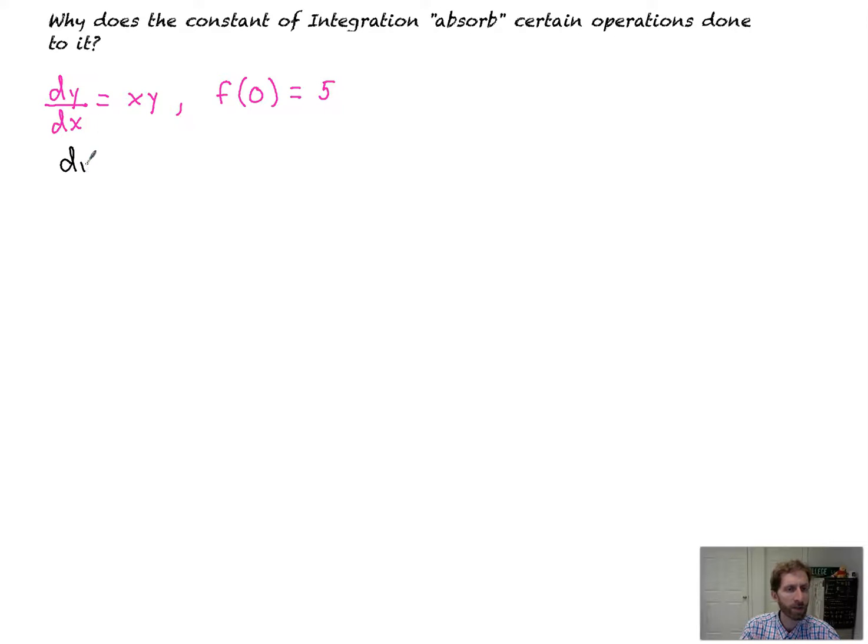So we're going to separate variables like normal, and you get dy over y, and that's equal to x dx. We're going to integrate both sides, and you get ln of y. You actually don't have to technically show the integration on the AP BC exam. And that's equal to x squared over 2 plus c. Enter in c.